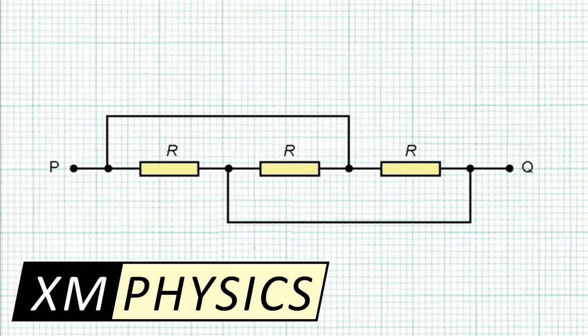Hello everyone. In this problem we have three resistors connected in this manner and we are asked to calculate the resistance between point P and point Q. So pause the video and try to solve the problem yourself before you come back for the explanations.